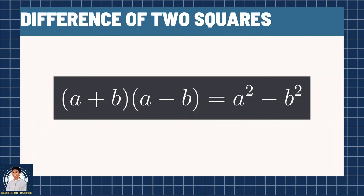The second special product on our list is the difference of two squares. It states that (A + B)(A - B) = A² - B². To recall this, we only have to recall the name itself — difference of two squares. The factors are just one with a positive sign and one with a negative sign between our two variables. Now let us try problems related to this.